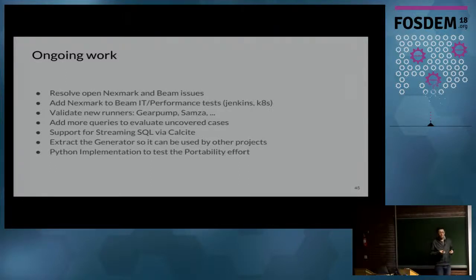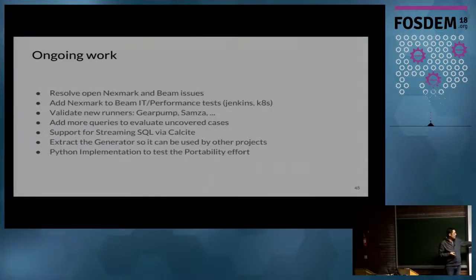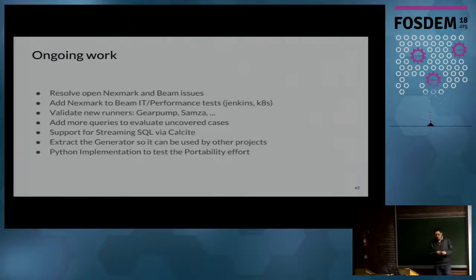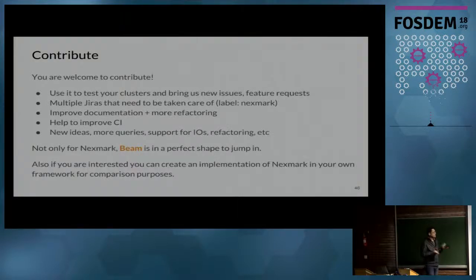What's next? The ongoing work includes fixing all pending compatibility issues and adding runners not yet in the matrix. We really want to automate this in our CI infrastructure — if you're an expert in Jenkins or Kubernetes, you're very welcome. We also have someone from Google working on streaming SQL support for Nexmark, translating the Java queries that can be expressed in SQL. And I really want to extract the generator so it can be used by other systems — for example, if someone wants to implement Nexmark in pure Flink.